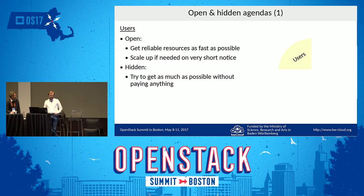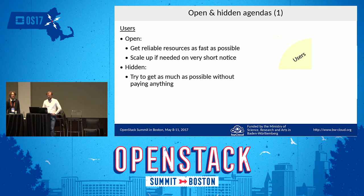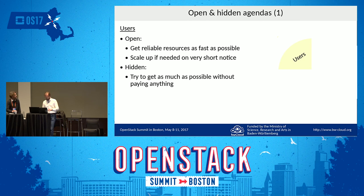We have to think carefully about our stakeholders and their agendas. Starting with users: openly they want reliable resources as fast as possible, and to scale up for new scenarios. Their hidden agenda is that they don't want to pay, or want to save as much as possible — they want it cheaper than Amazon or Google, maybe even free.